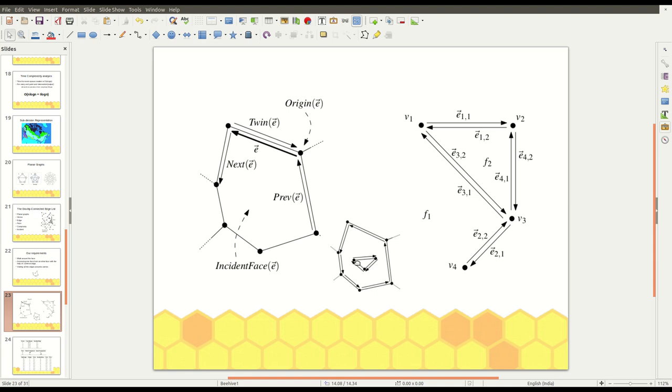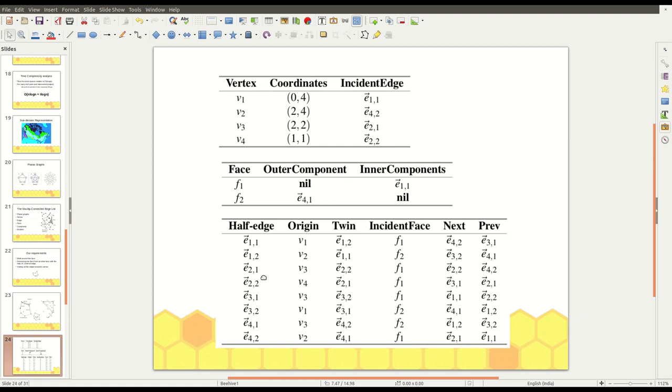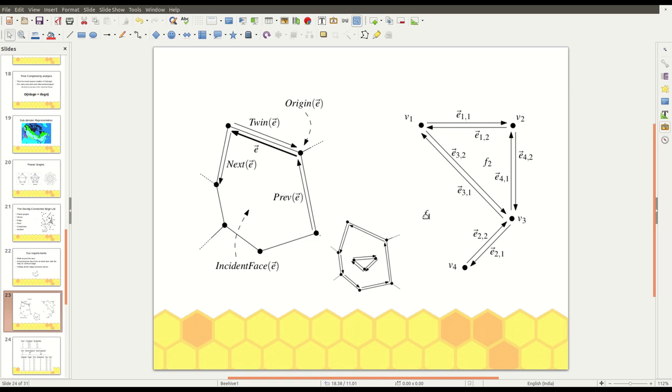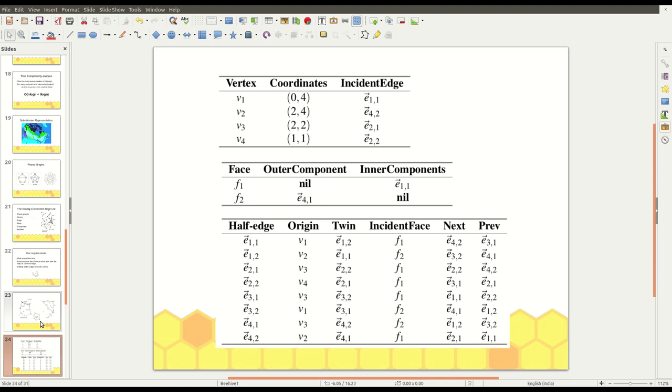So, in this example also, for face F1, we don't have any outer boundary because it's an unbounded face. For this face, this extends up to infinity. It doesn't have any edges bounding it. So, the outer component is nil.